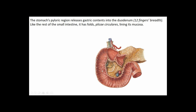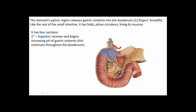The duodenum stretches from the stomach to the jejunum and, like most of the small intestine, has plica circularis on its surface. The four portions are: the superior portion receiving gastric contents from the pyloric sphincter, where Brunner's glands increase the pH of the acidic stomach contents back toward a biological pH. The descending duodenum is very important as it's where pancreatic enzymes and bile are released into the duodenum to help mobilize fats, dissolve proteins, and carbohydrates.